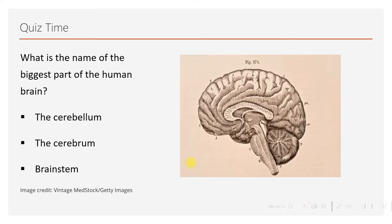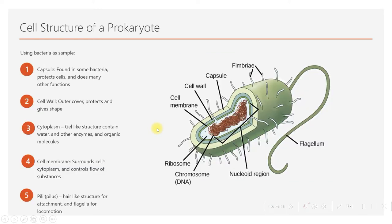Before we go ahead, here's a quiz for you. The question is: what is the name of the biggest part of the human brain? Is it A, the cerebellum; B, cerebrum; or C, brain stem? Please answer in the comment section — I'll give you the answer at the end of the video.